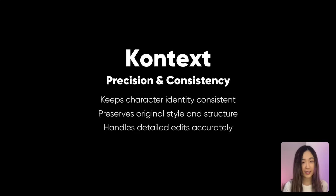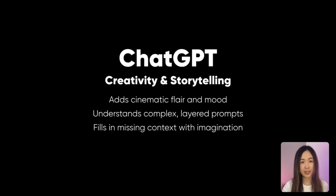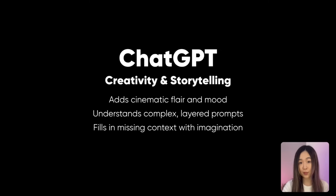So what did we learn? Context is the precision tool — it stays true to your character, keeps the style more consistent, and handles detailed edits cleanly. ChatGPT, on the other hand, brings more creativity and storytelling to the image — it fills in the blanks, adds its own flair, and understands what you're going for even when you didn't spell out everything in your prompt. Both have their strengths, and with this design tool you don't have to choose. Try it out yourself and let us know your thoughts in the comments. Happy creating!